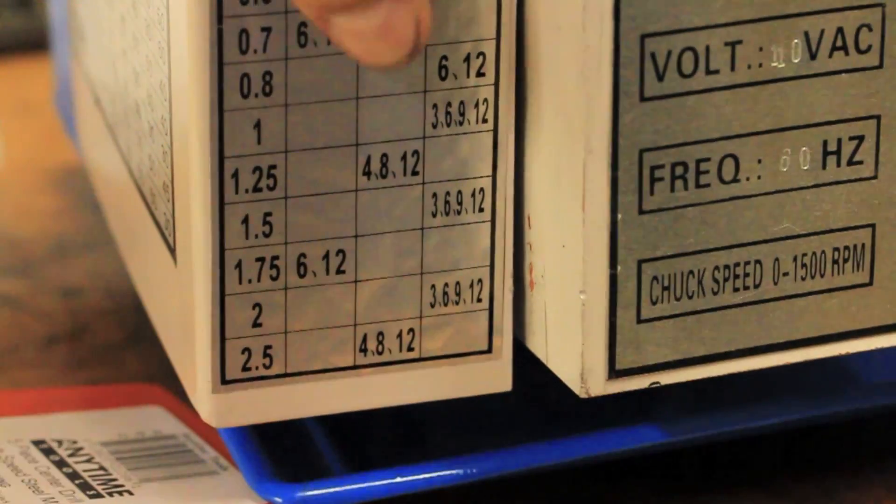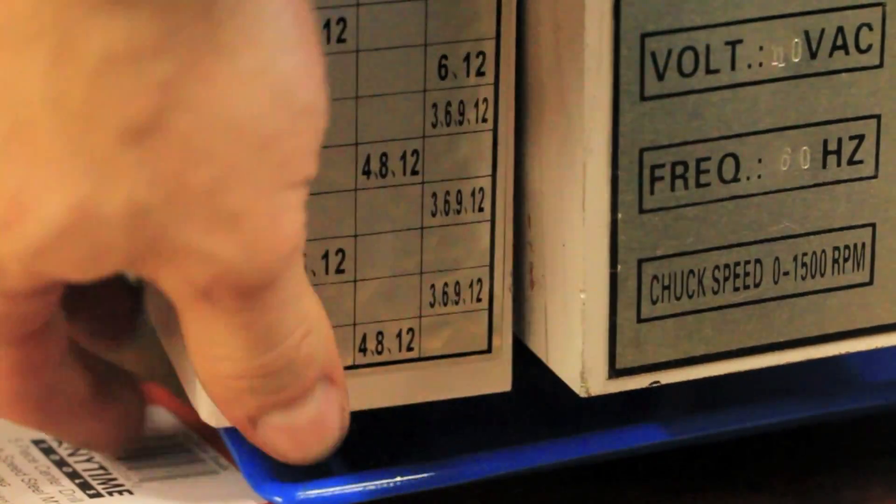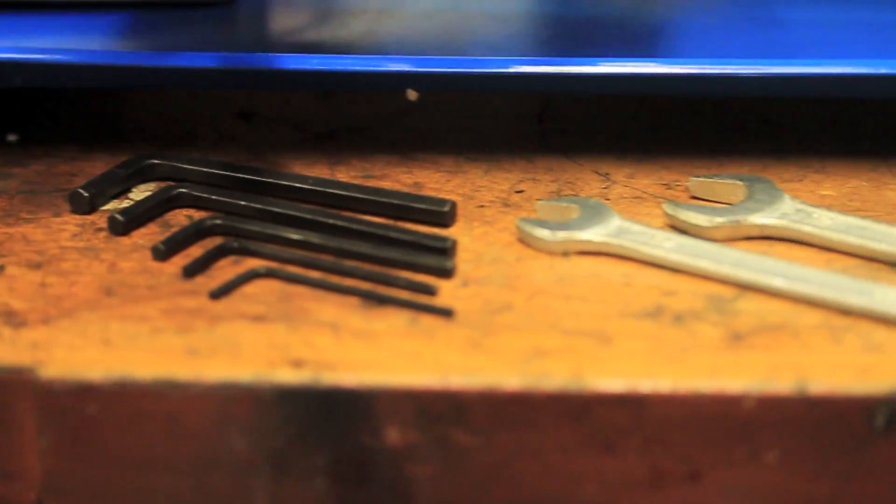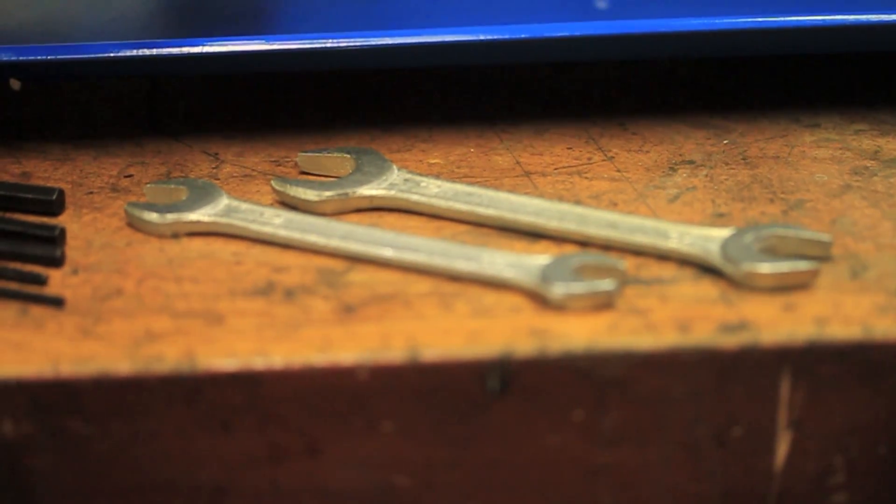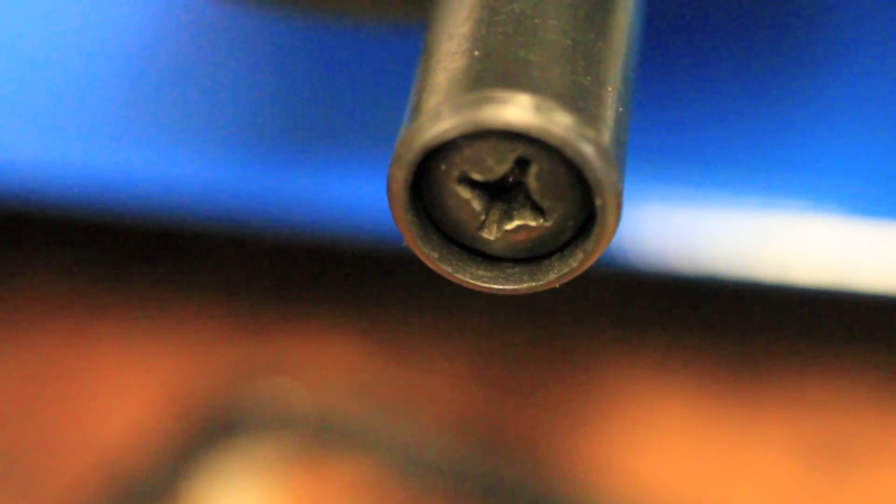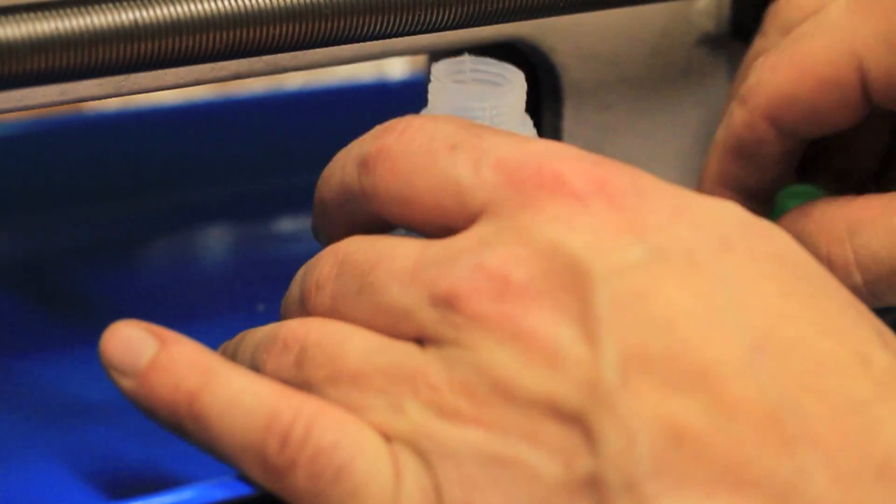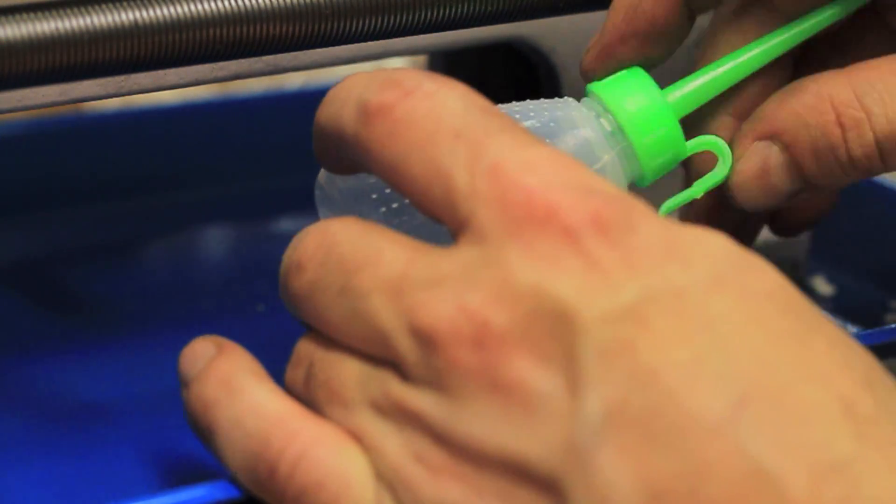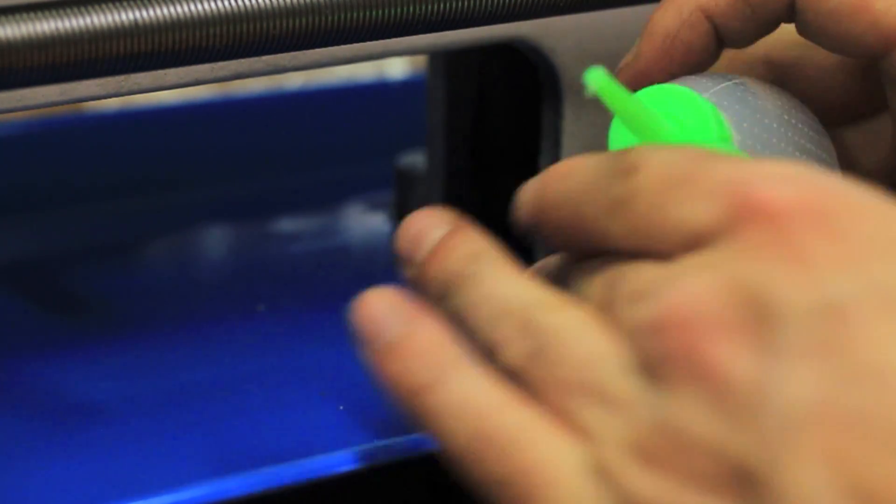It comes with almost every tool you need to make adjustments on this lathe, except for a screwdriver for the handles. It's not a tremendous value, but it also comes with this little oiler. Might be convenient.